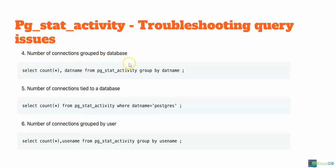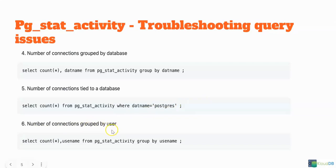Number of connections grouped by database. Let's say you have multiple databases — 10 databases — and you want to know the number of connections for each. You can do SELECT COUNT(*), datname FROM pg_stat_activity GROUP BY datname, which groups by database name. And if you want to get the number of connections tied to a particular database, you can add a WHERE clause with the datname you're trying to retrieve. And then the number of connections grouped by user — you can do a GROUP BY usename to see which user has more connections and which user is causing the load.